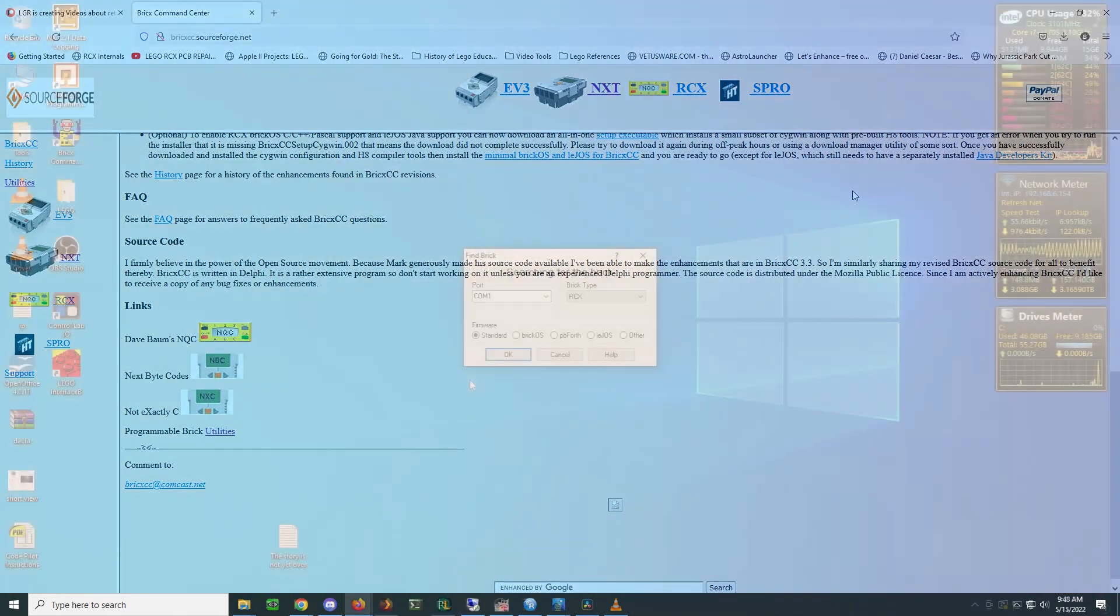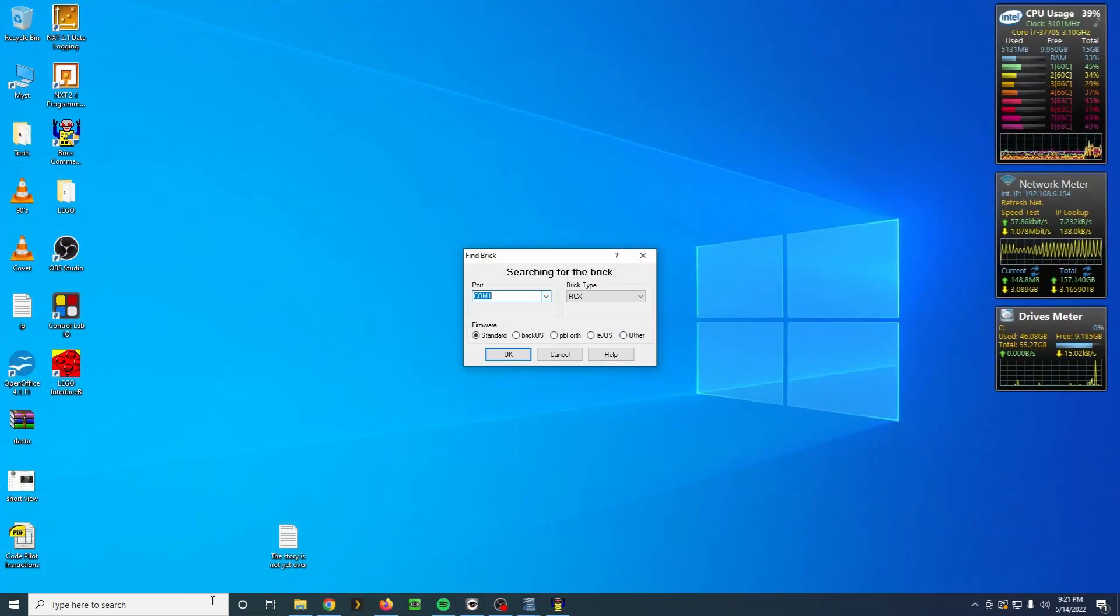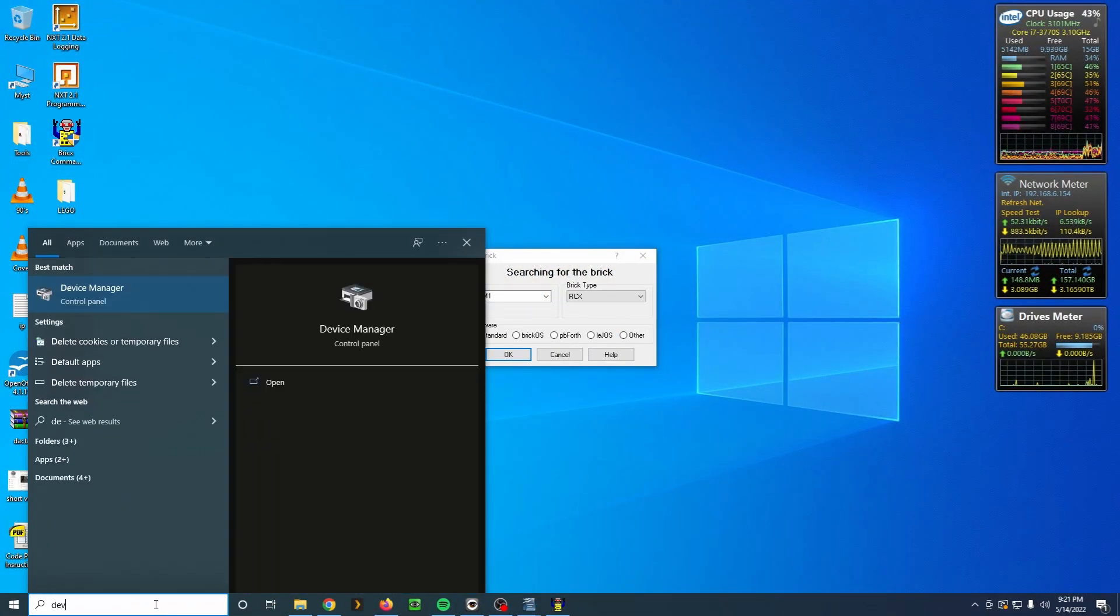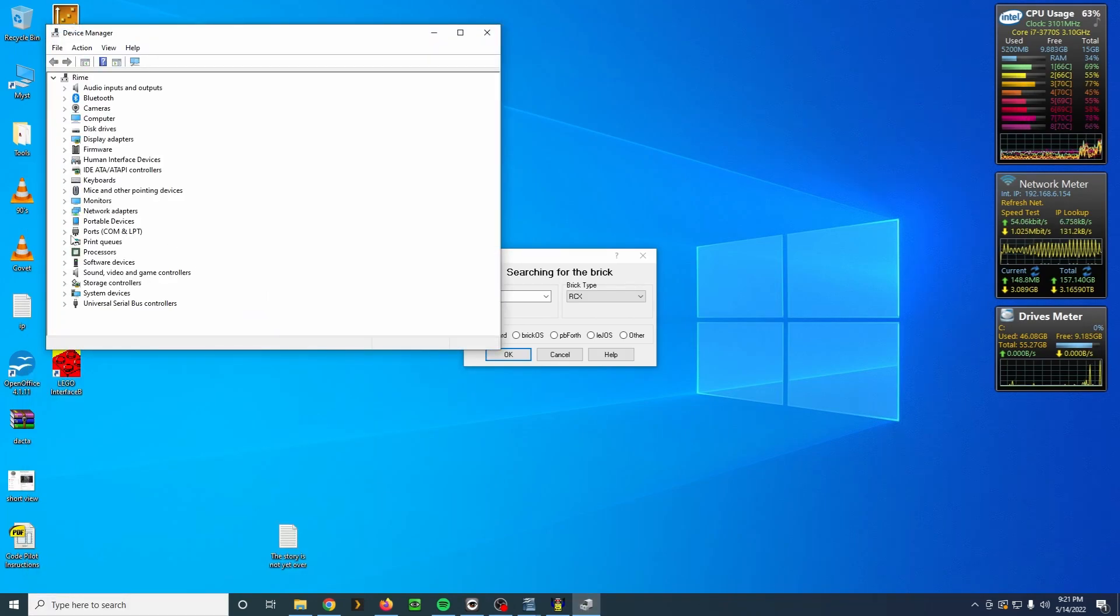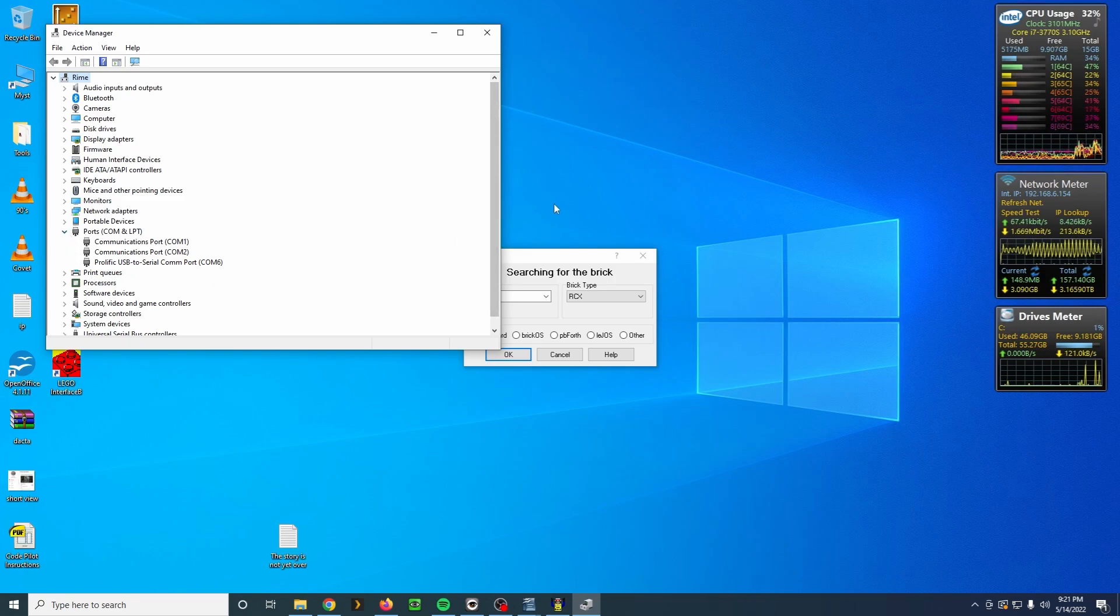When you first start the software, you'll need to select the COM port your tower is connected to. You can check in Device Manager under Ports to see the COM port number. Also, be sure the Brick Type is set to RCX.